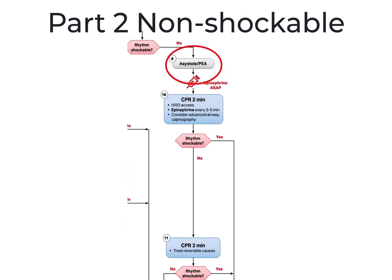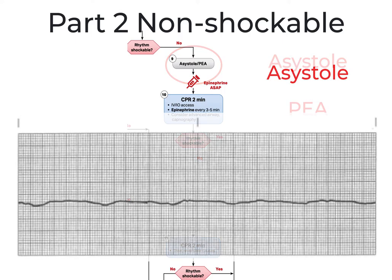The non-shockable rhythms are asystole and those rhythms we classify as pulseless electrical activity, or PEA. By definition, asystole means without systole, and we are specifically referring to ventricular systole, which is identified by the lack of any recognizable electrical or mechanical activity coming from the ventricles.